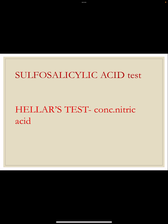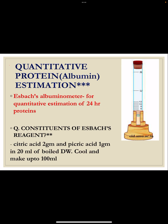Other tests used are the sulfosalicylic acid test, where the reagent contains sulfosalicylic acid, magnesium sulfate, and sodium sulfate. We add 2.5 ml of sulfosalicylic acid solution to 2.5 ml of urine in equal quantities; a white cloudy precipitate indicates the presence of proteins. In Heller's test, we use concentrated nitric acid: take 5 ml of urine and add a few drops of concentrated nitric acid from the side of the tube. A white ring formed at the junction of acid and urine indicates proteins are present.